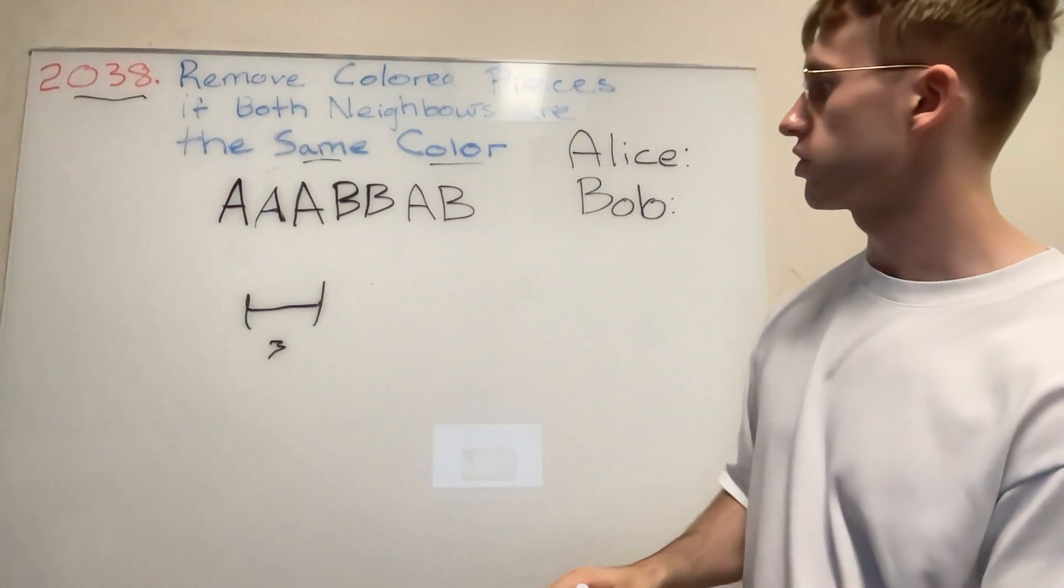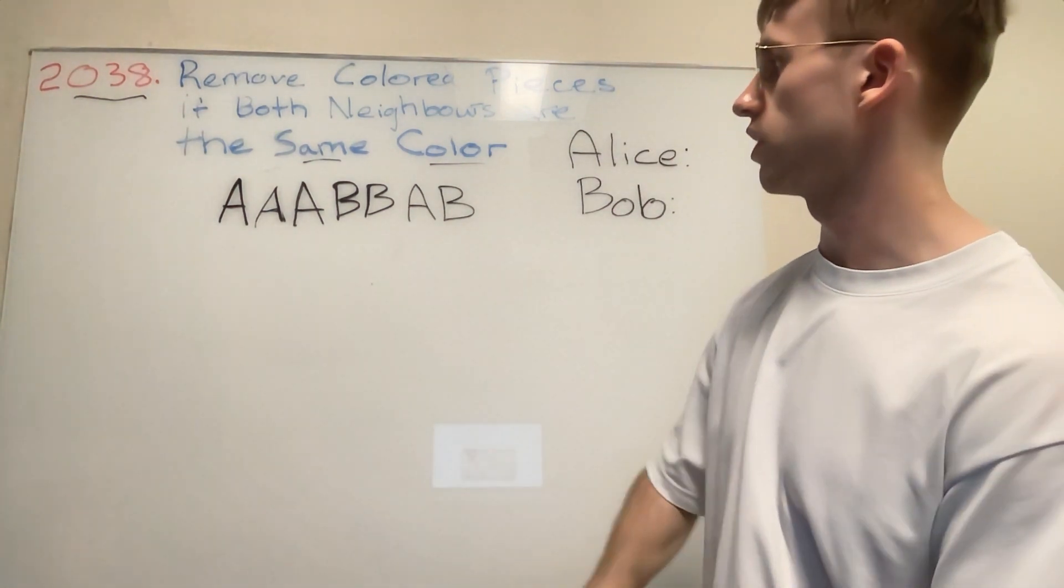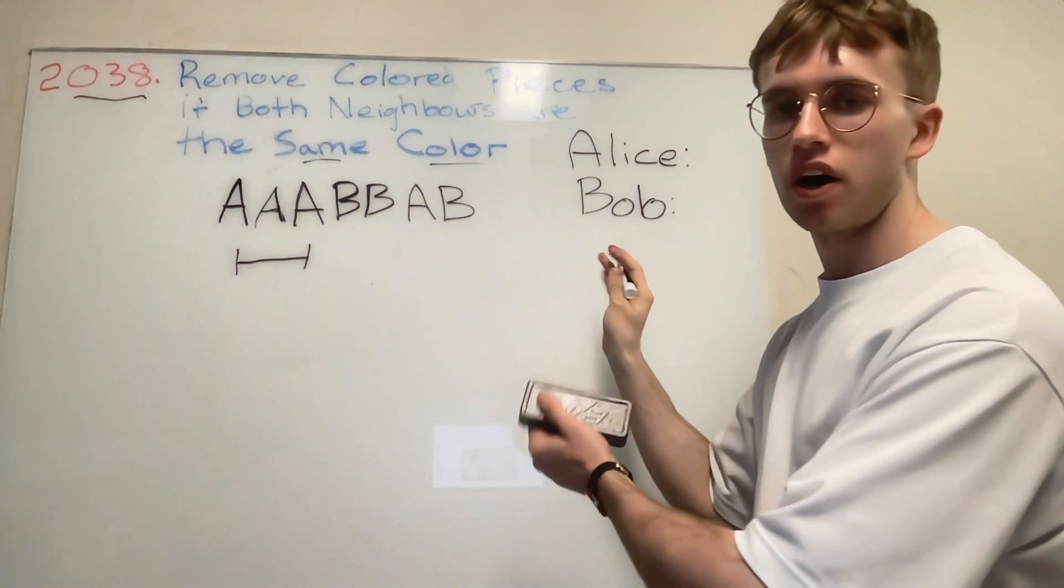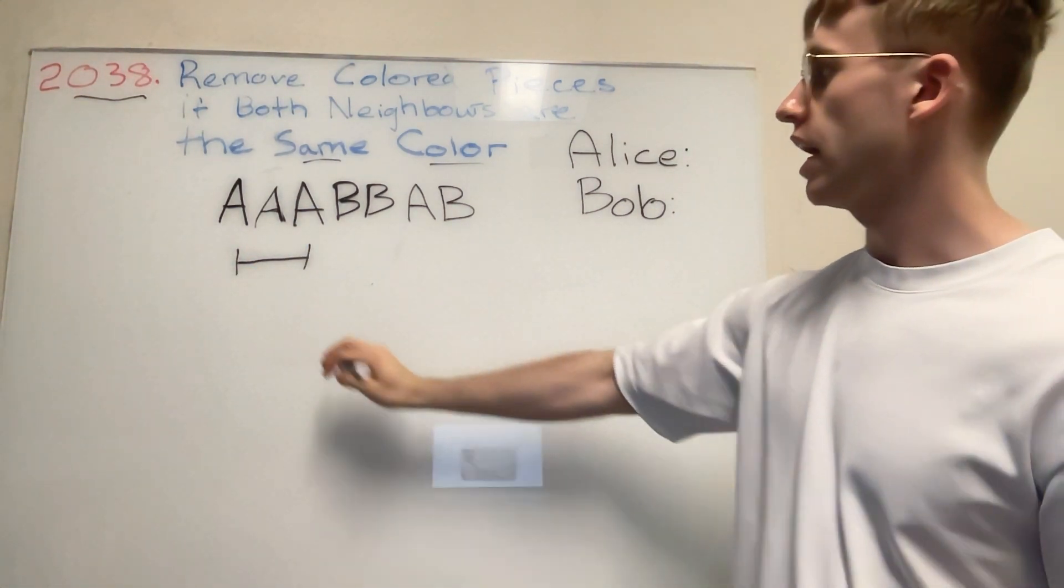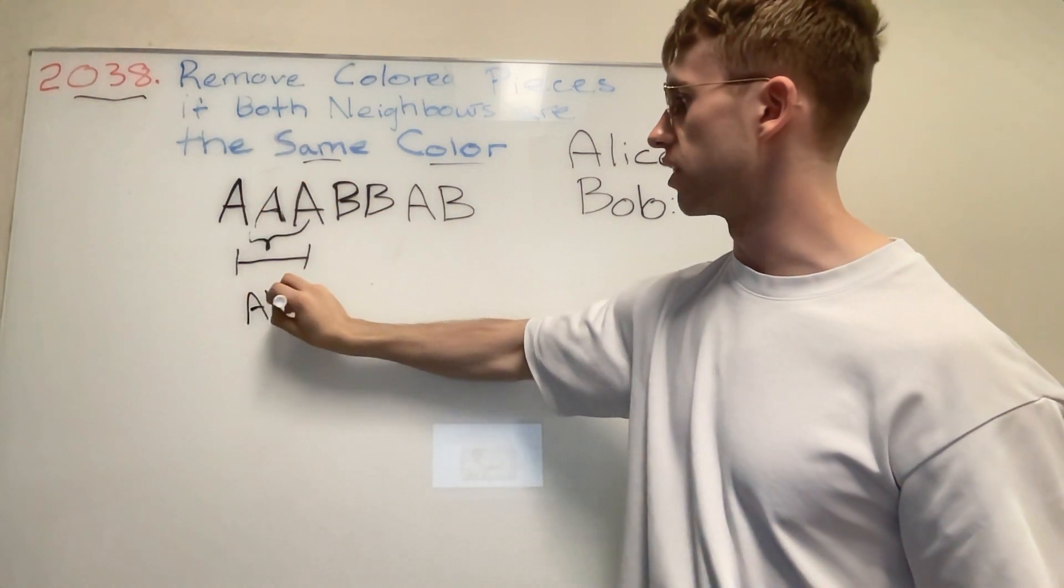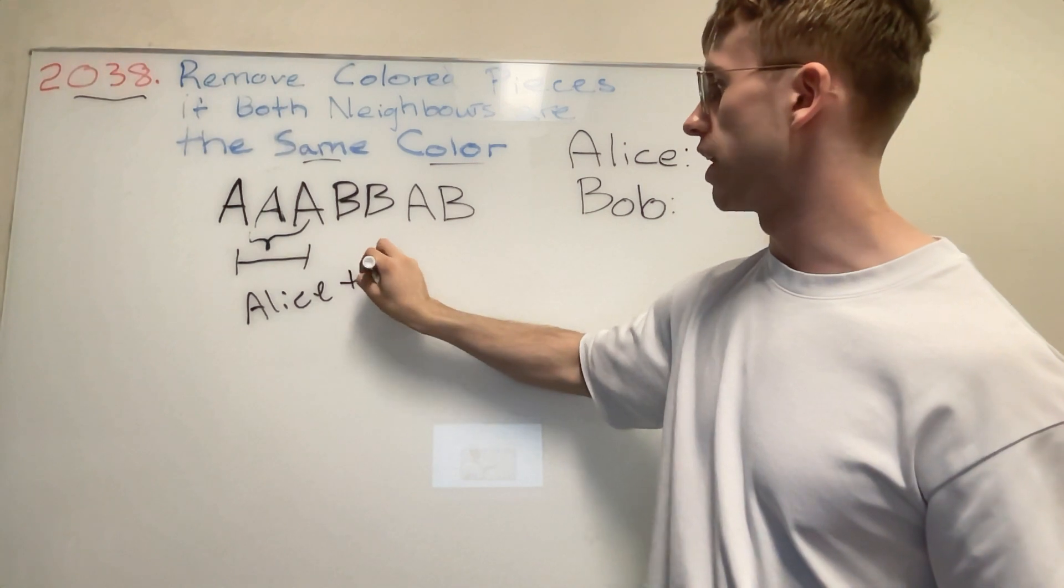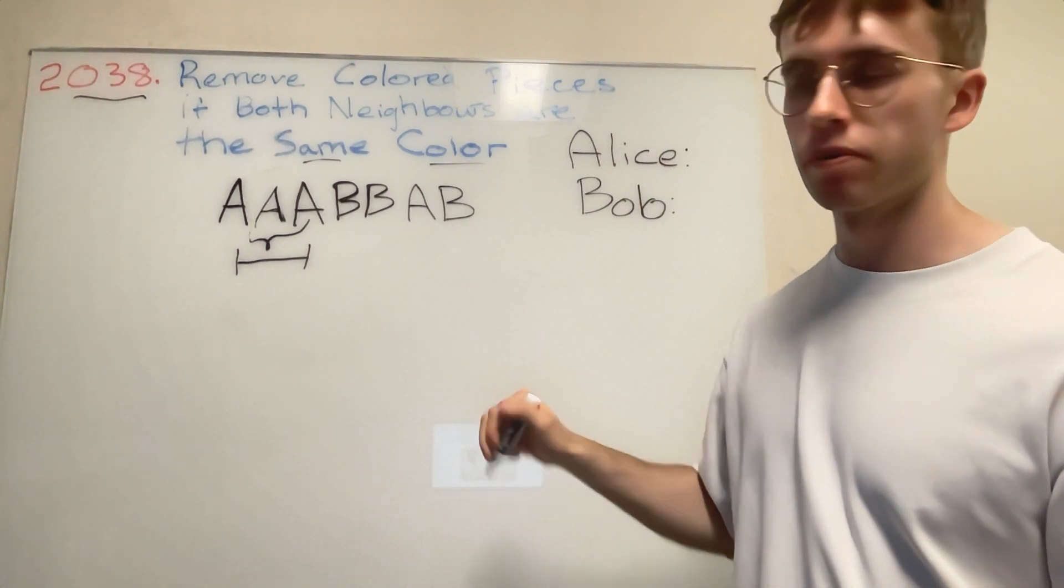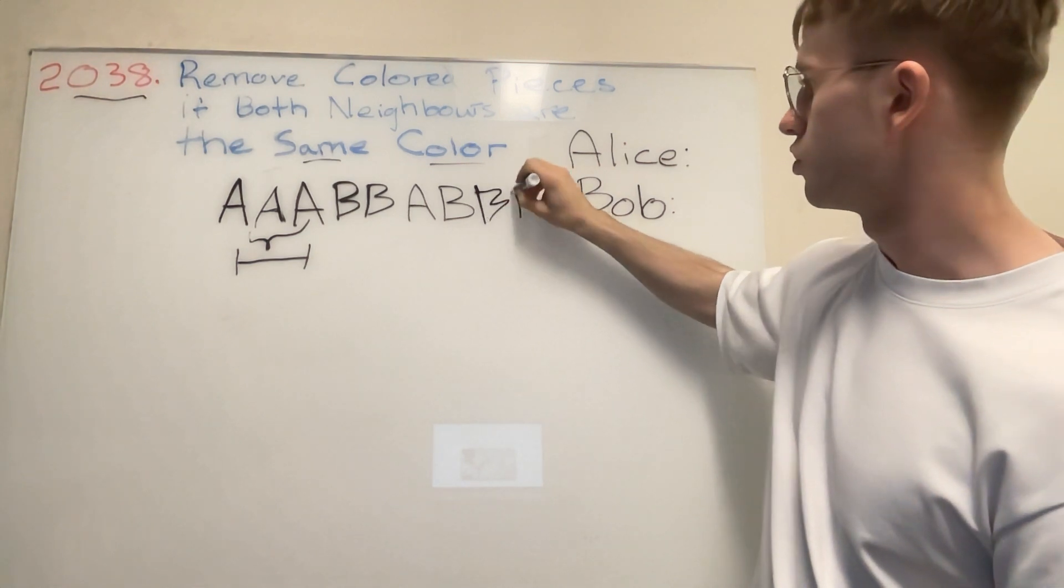This sliding window of fixed length is going to start here and just slide along maintaining that length. Whenever it encounters three A's in a row, it's basically going to give Alice one extra point.